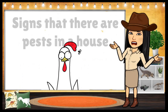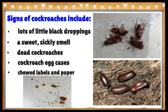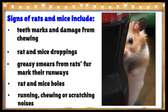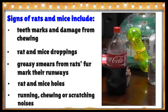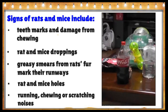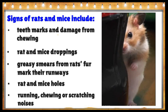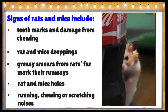Here are the signs that there are pests in a house. For cockroaches: lots of little black droppings, a sweet sickly smell, dead cockroaches, cockroach egg cases, and chewed labels and paper. Signs of rats and mice include teeth marks and damage from chewing, rat and mice droppings, and greasy smears from rats' fur marking the runways.